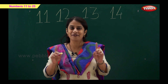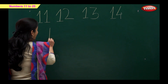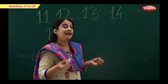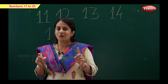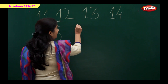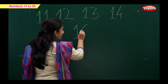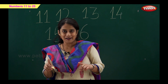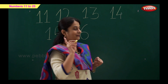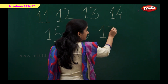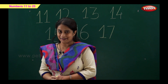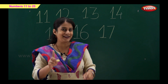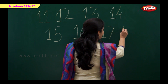Which two numbers make 15? 1 and 5! So 1 and 5 is 15. What comes after 15? 1 and 6 makes number 16. Correct! And now number 17: 1 and 7 makes 17. Now your turn — yes, 1 and 8 is 18!